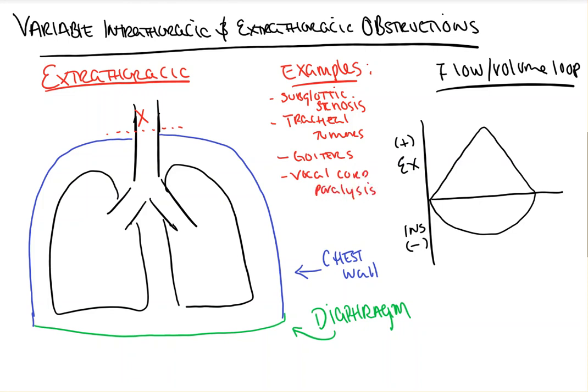As you can see, we've drawn our diagram of our lungs and our airway. The blue line represents the chest wall, the green our diaphragm, and the black lines our airway and our lungs. Our X there in red is our lesion.